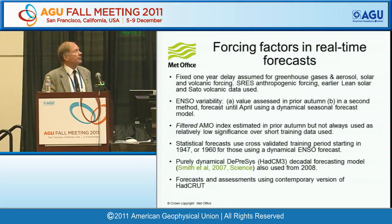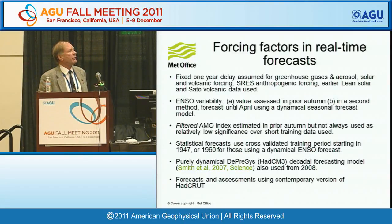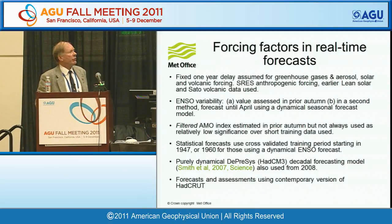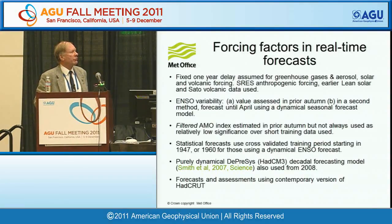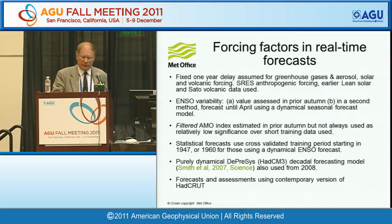Moving to real-time forecasts. Most of the ones I'm going to talk about are slightly differently constructed because it was all done many years ago, starting in 1999. We have a fixed year-one delay for greenhouse gases, and variability has to be assessed in the previous year, so there is some loss of skill. We used a filtered AMO index rather than an unfiltered one, which we now regard as suboptimal. We also used a technique of predicting ENSO using the Met Office's seasonal forecasting model called Glossy. We now also use the decadal forecasting model.